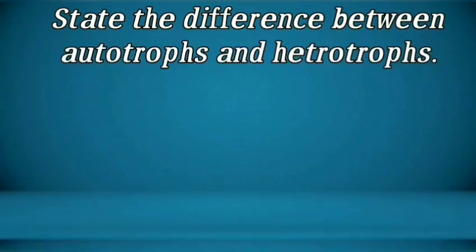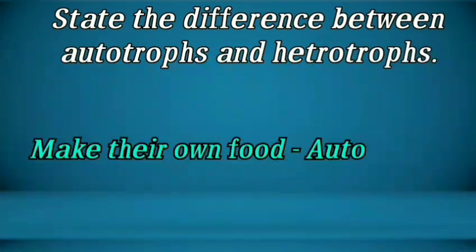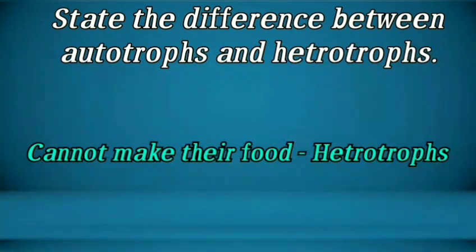Question number 8: State the difference between autotrophs and heterotrophs. Plants which make their own food are called autotrophs, while organisms which cannot make their own food are called heterotrophs.